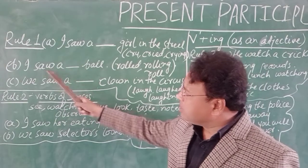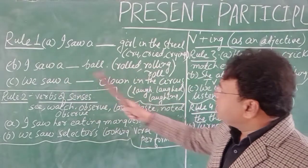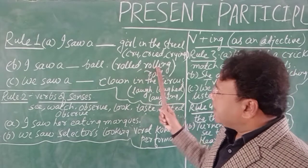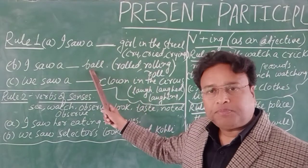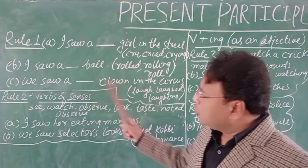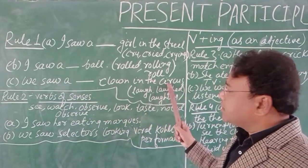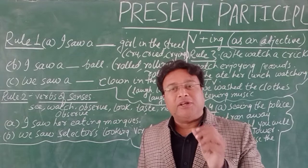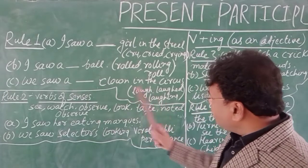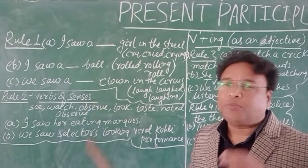دوسرا دیکھیں — یہاں پر بھی یہی rule apply ہو رہا ہے: 'I saw a rolling ball.' تیسرا بھی یہی condition پوری کر رہا ہے — یہاں clown ہے اور یہاں a ہے۔ 'We saw a laughing clown in the circus.' Clown وہ joker ہوتا ہے جو circus کے اندر ہوتا ہے۔ Exam میں competitive exam میں اس طرح سے پوچھ لیا جاتا ہے۔